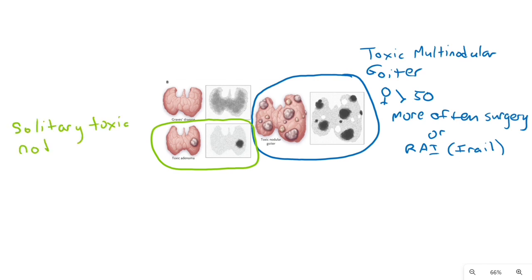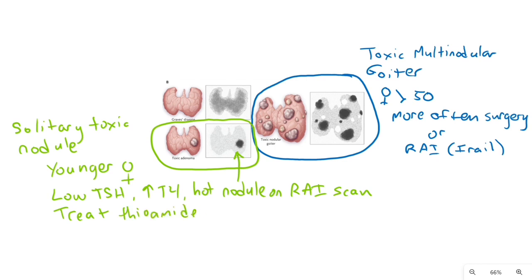Solitary toxic nodule is in younger women. They have low TSH, high T4, and hot nodules on radioactive iodine, and usually are treated medically with thioamines and radioactive iodine. Resect the lobe if medical treatment fails.